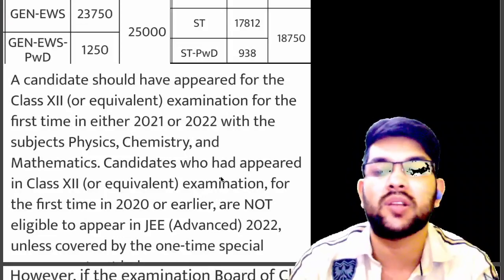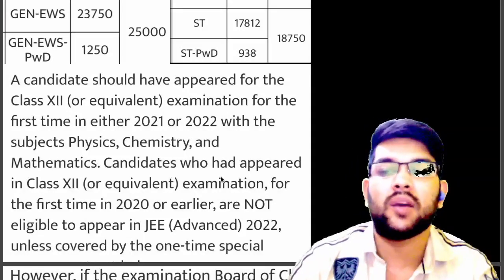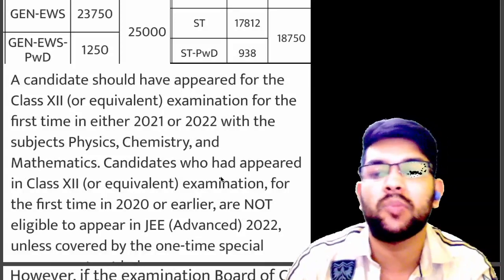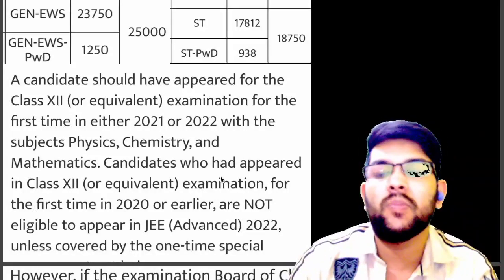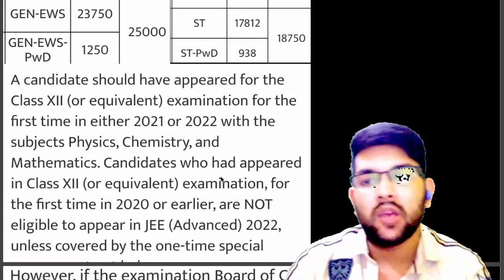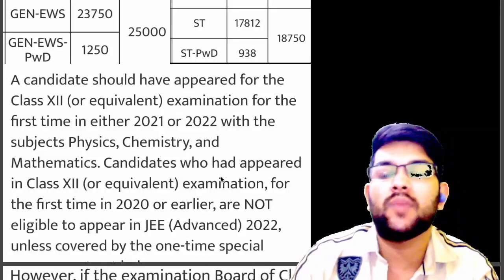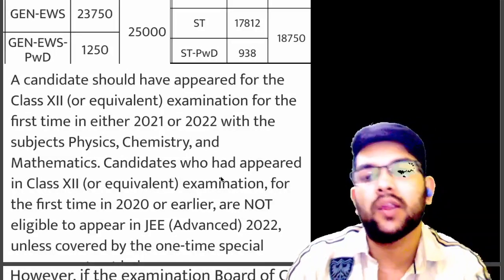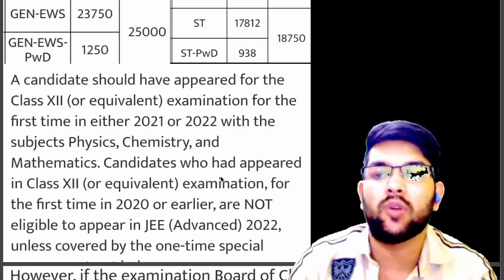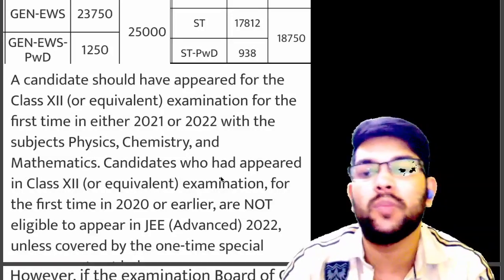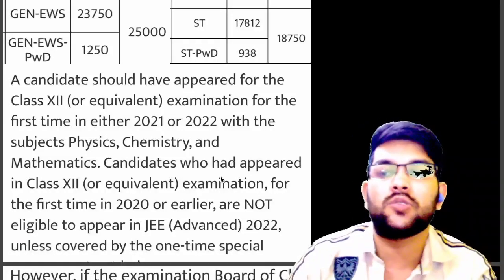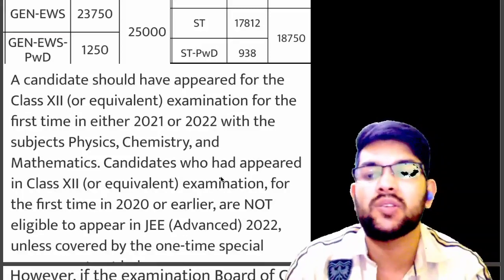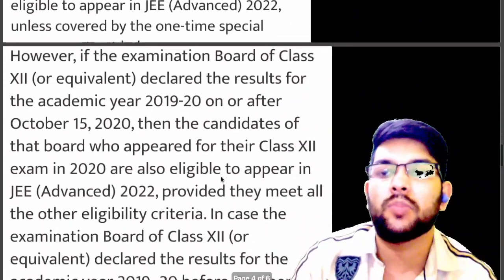Students who appeared in 2020 or earlier are generally not eligible. However, there's a special case: if your 2020 result was published after October 15th, you may be eligible. Also, if you registered for JEE Advanced 2021 but didn't appear in either Paper 1 or Paper 2, you are automatically eligible for JEE Advanced 2022.